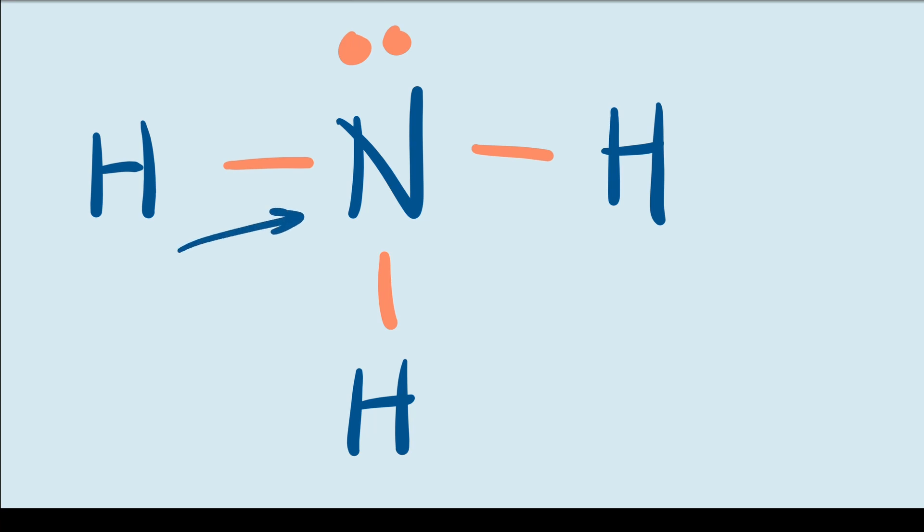We can annotate that fact using these dipole arrows pointing towards the nitrogen atom, showing that it has more negativity than the hydrogen atoms. You can see that the arrows point in this general direction, showing that there is an overall dipole in the molecule.